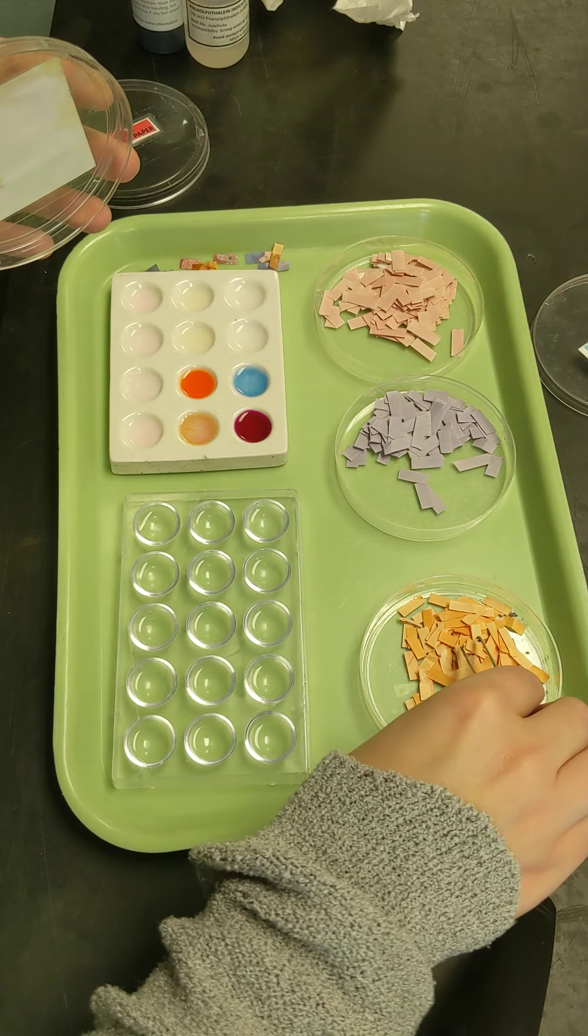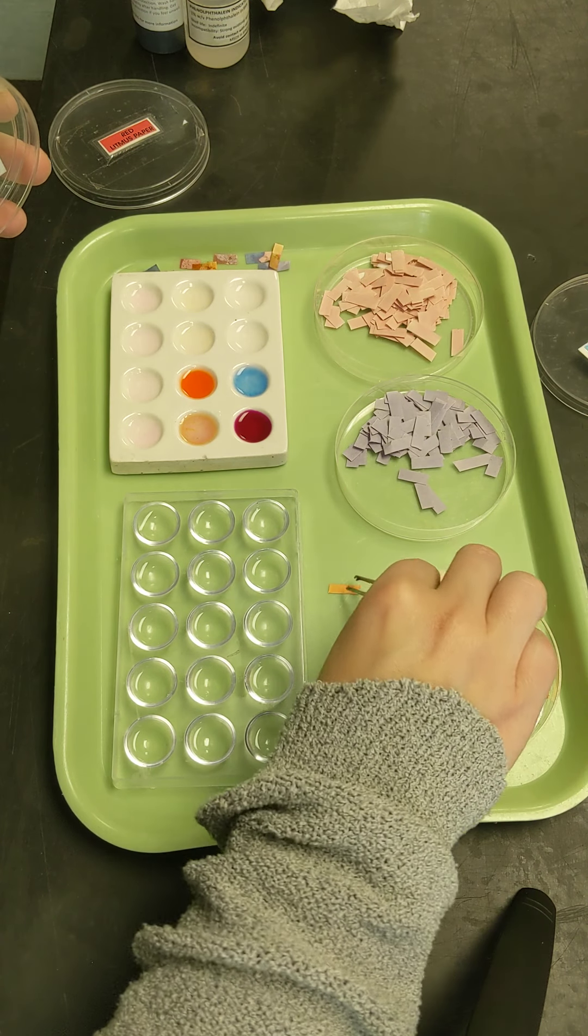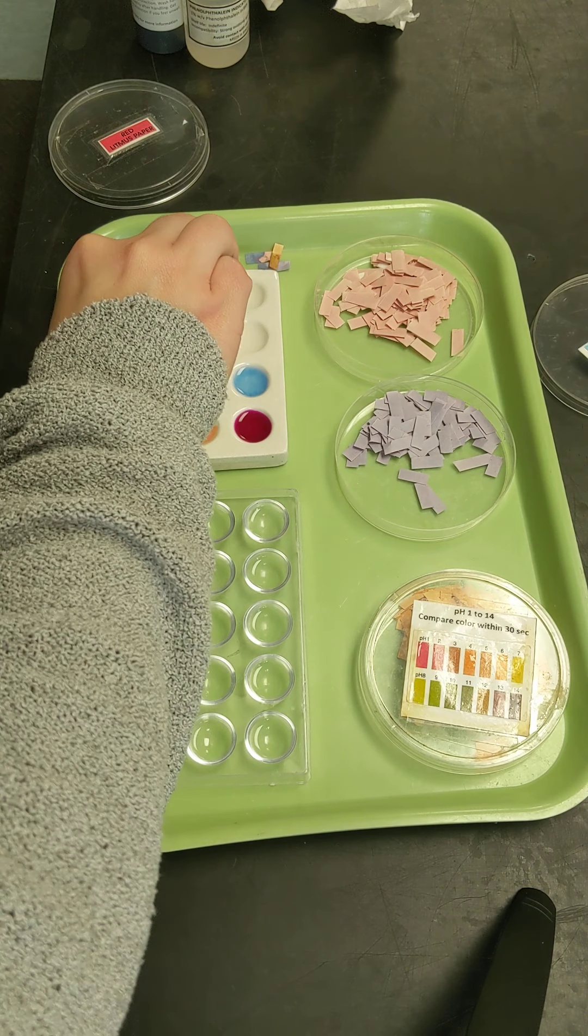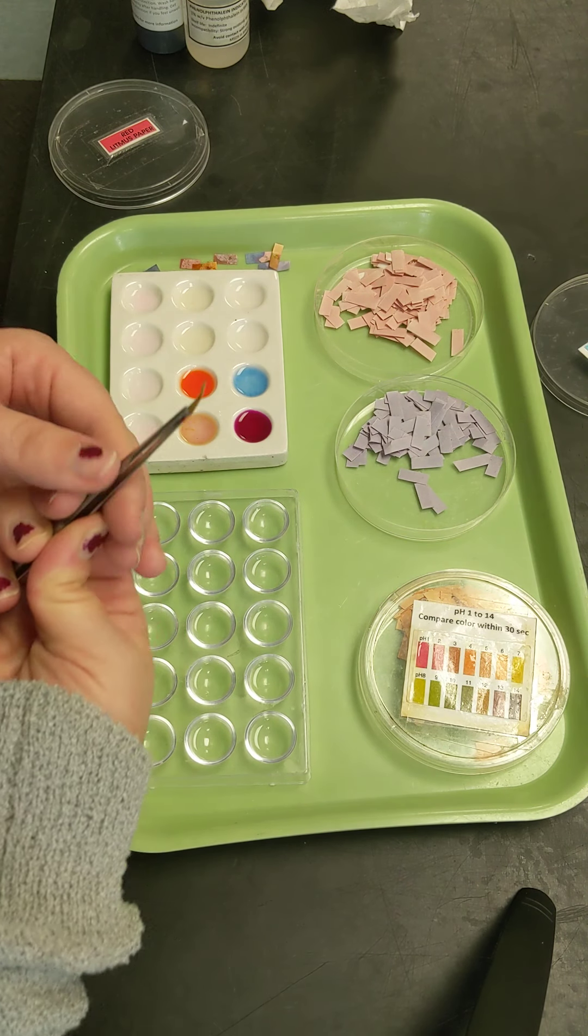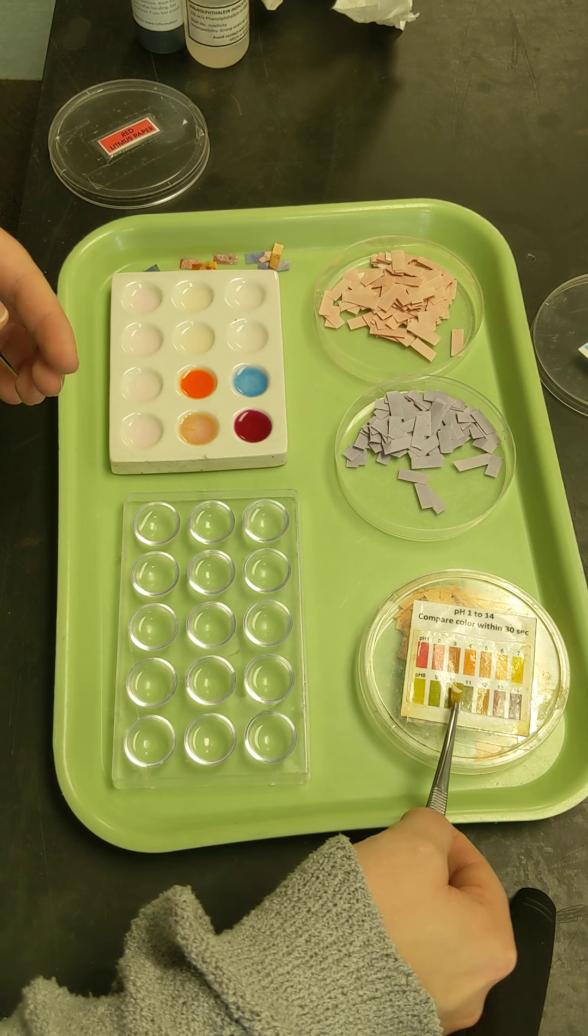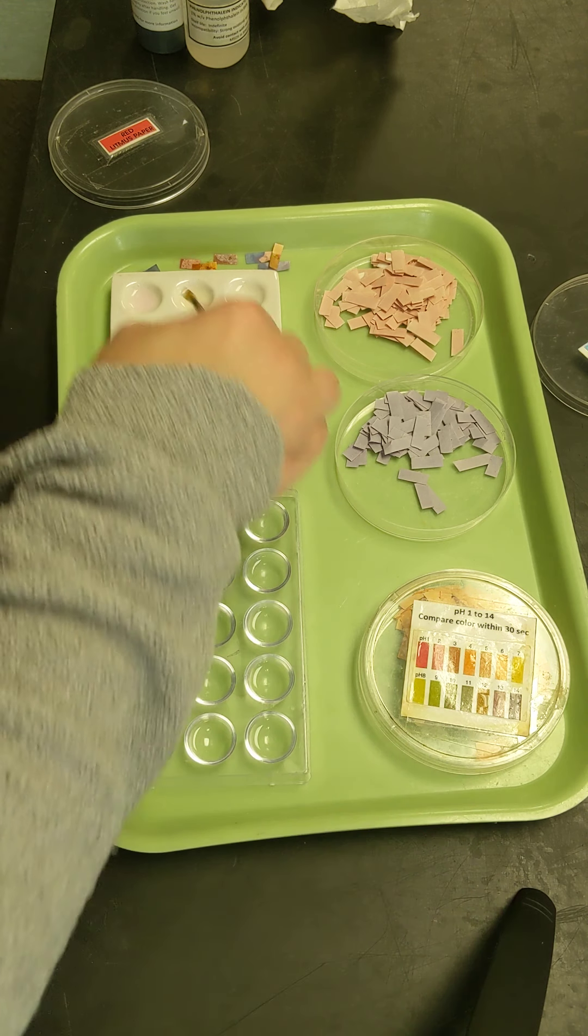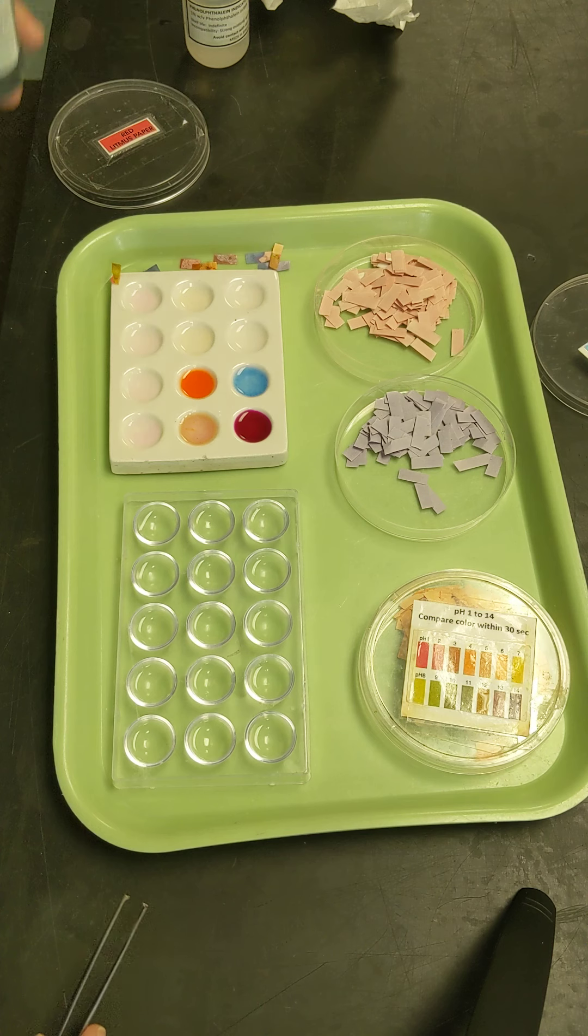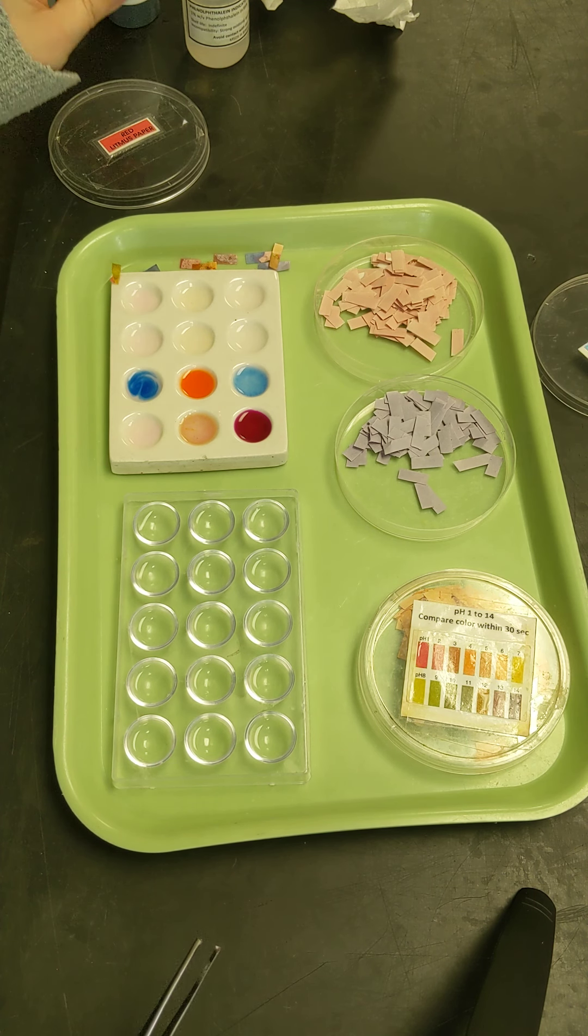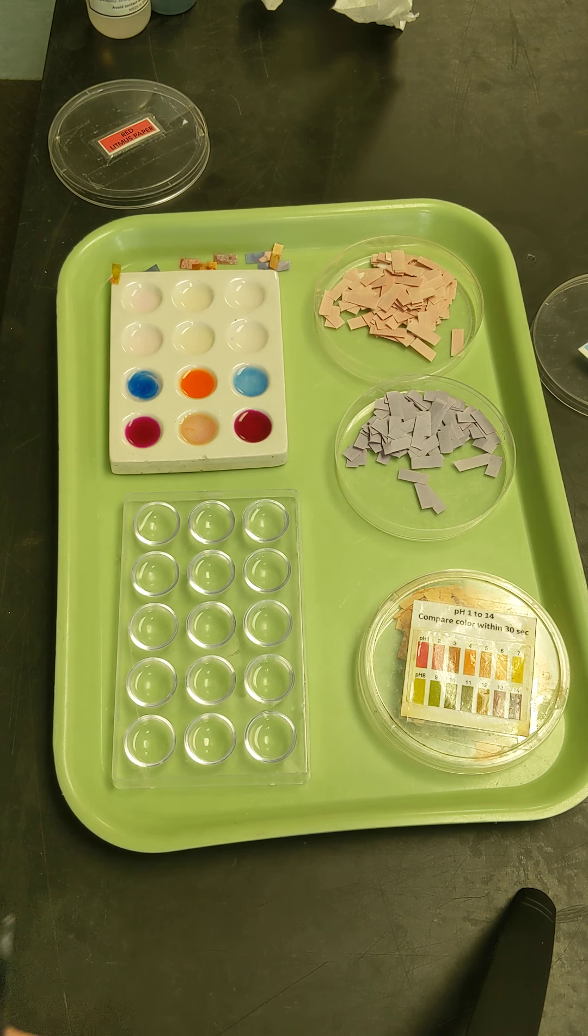Let's look at here. Wait for the color change. We're looking closer to a 12. So another very strong base. So again, bromothymol blue should stay its blue color. And phenolphthalein should turn pink in the presence of a base.